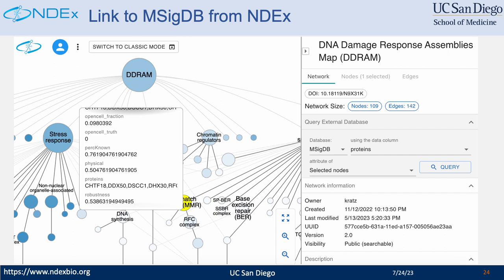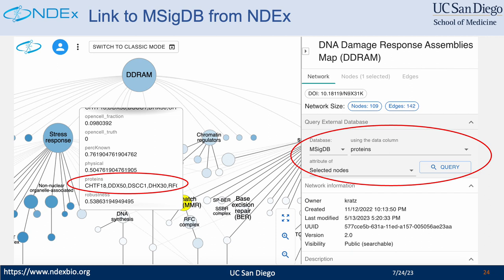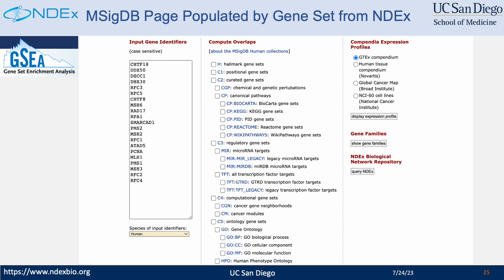This screen shows an example of linking to MSigDB from NDEX. This is a DNA damage response assembly map in NDEX — each node in this network is a subsystem with an attribute called 'proteins,' whose value is a set of genes. If a user wants to run analysis of this gene set in MSigDB, they can go to the 'Query External Database' panel on the right-hand side, choose the MSigDB database as the source, select 'proteins' as the data column, and click query. The user will be redirected to the MSigDB site, where the gene set is populated to the search box and they can continue their gene set analysis.